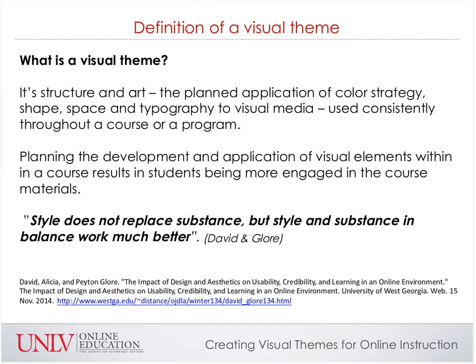First, let's define what we're talking about. What is a visual theme? As I was hinting earlier, it's structure and art put together—a planned application of color, shape, space, typography, and various media used effectively and consistently throughout a course. The other component is planning how all those things fit structurally into a WebCampus course. I love this quote: 'Style does not replace substance, but style and substance in balance work much better.' We have good research on that, and it actually works.